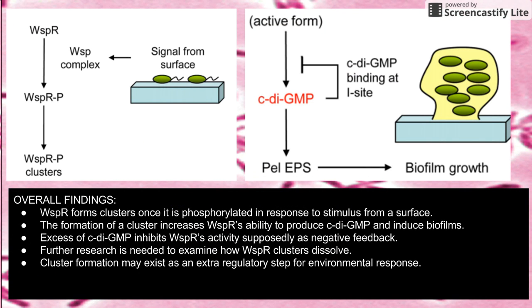This paper was pretty short but really compact with a lot of data. The overall picture at the end is that WISP-R gets phosphorylated, then makes clusters, and those clusters will make CDGMP.